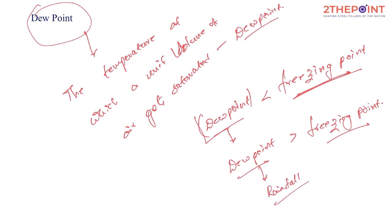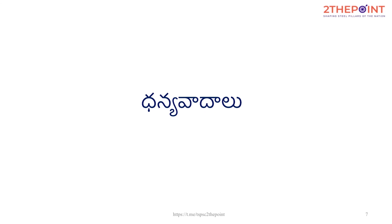So the dew point is the temperature at which the unit volume of air gets saturated. To summarize: we covered absolute humidity, specific humidity, relative humidity, and dew point. Relative humidity becomes 100% either by increasing absolute humidity — increasing the amount of water vapour — or by decreasing temperature, which results in falling humidity capacity.